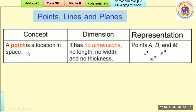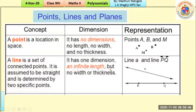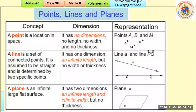A point is like a location in space — it has no dimensions, no length, no width, and no thickness. Next is line: a line is a set of connected points lying on a straight path. A line has no width or thickness, and it has infinite length. We represent a line using two arrowheads at the ends.